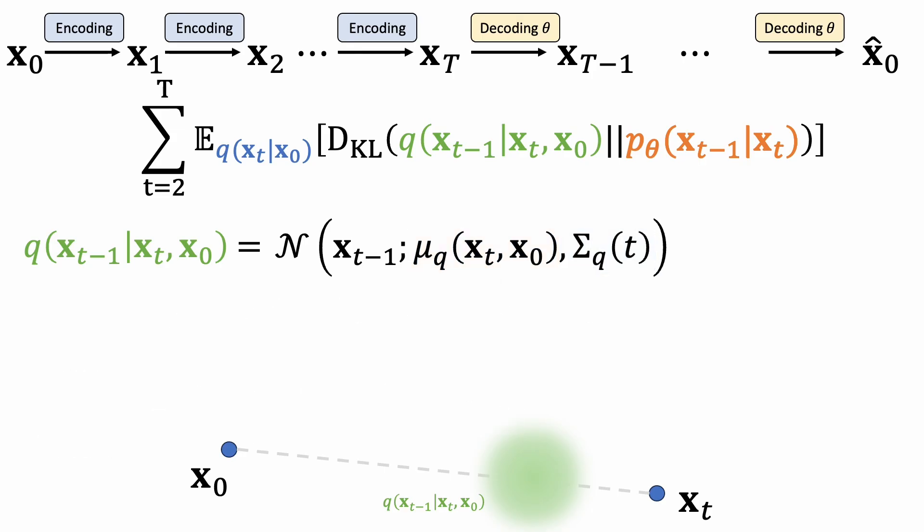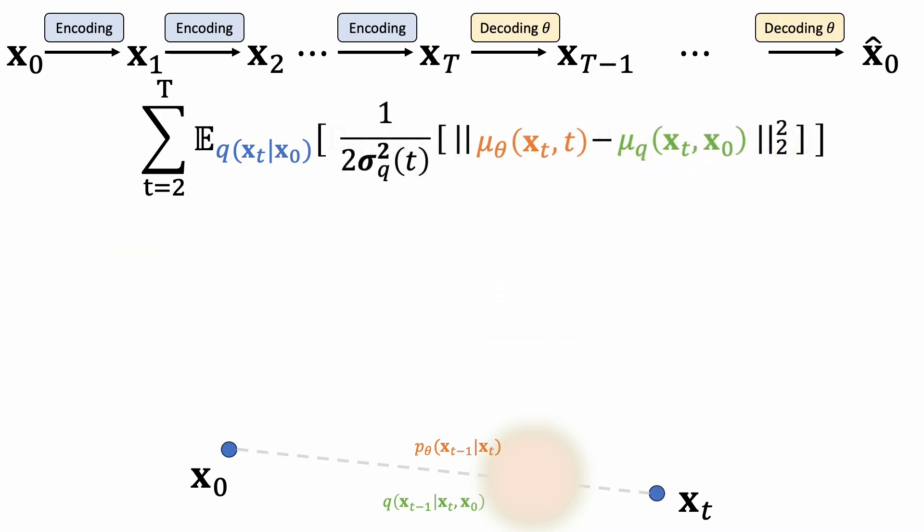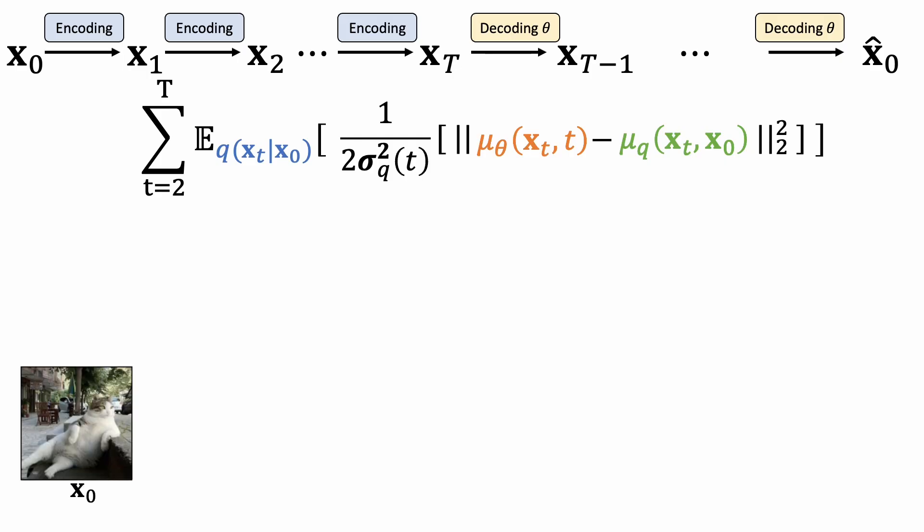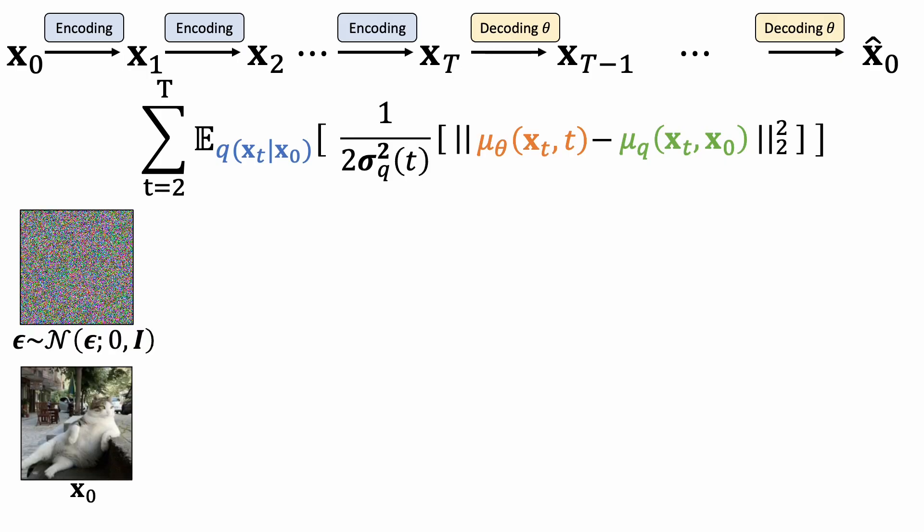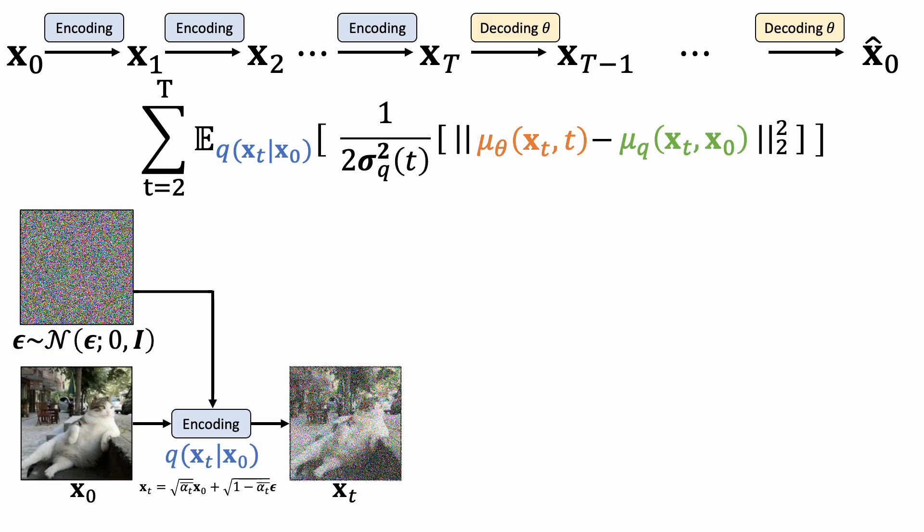Here the probability from our denoising network is also a Gaussian. Since both are Gaussian distributions with the same variance, minimizing the KL divergence terms is equivalent to minimizing the distance between the means of the two distributions. The process looks like this. We sample a clean image x0 from the dataset and a noise image from a Gaussian distribution with zero mean and unit variance. We encode a clean image with forward diffusion to get a noisy image xt. We then compute the L2 loss between the predicted and ground-truth mean.